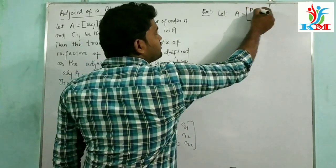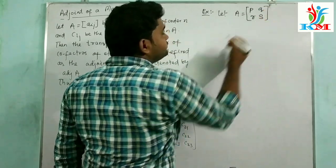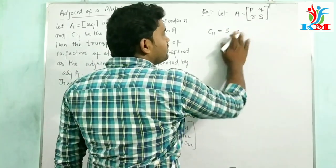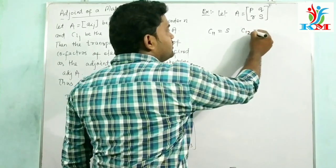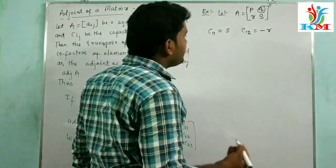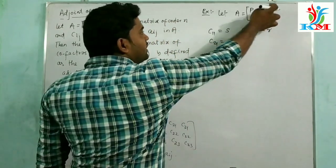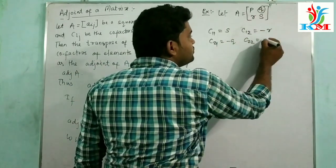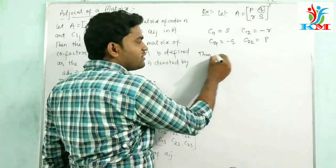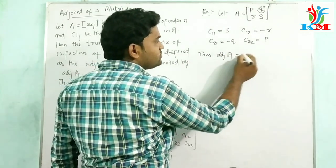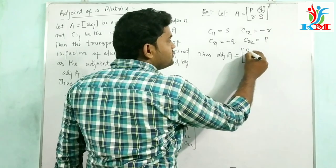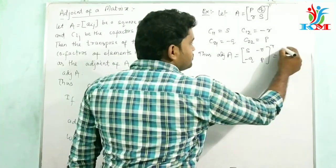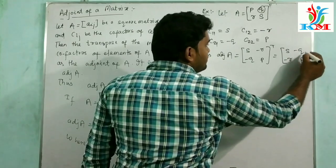Let's see an example. Let A be a 2×2 matrix with elements P, Q, R, S. The co-factor of P, that means C11, is equal to S. C12 is equal to minus R, C21 is equal to minus Q, and C22 is equal to the co-factor of S, which is equal to P. Thus, adjoint of A is equal to the transpose of the cofactor matrix [S, -R; -Q, P], which equals [S, -Q; -R, P].